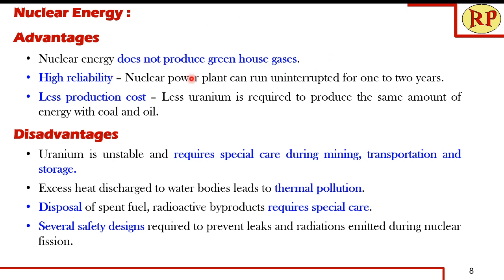The advantages of nuclear energy: it does not produce greenhouse gases since there is no carbon content to combust into carbon dioxide and contribute to global warming. It is highly reliable — a nuclear reactor can run non-stop for one to two years without interruption. The production cost is lower over the long run because 1 kg of uranium produces almost as much energy as one ton of coal.